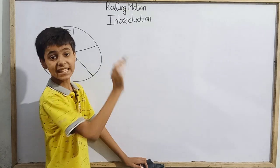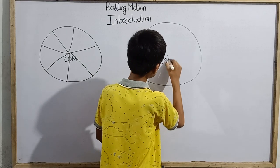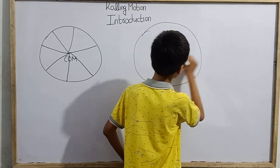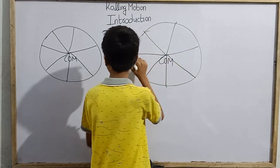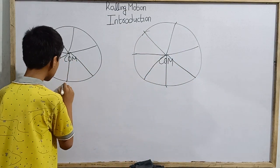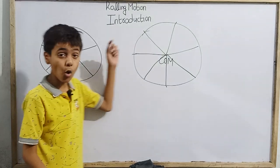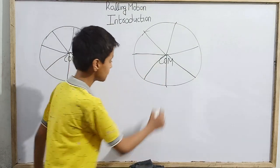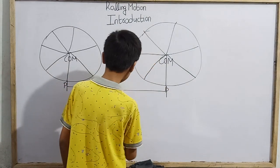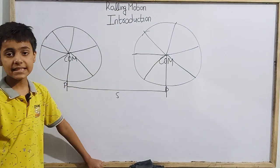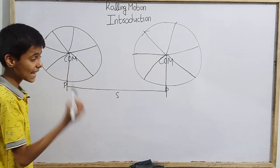Suppose there is a time interval. At the start we have a point P supposed to be at the bottom of the tire. That point P is always below the tire. In some time T, the tire has traveled a linear distance S. So S is the linear distance traveled in time T.